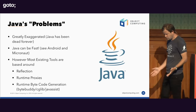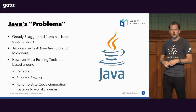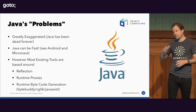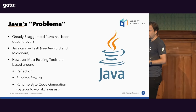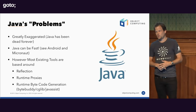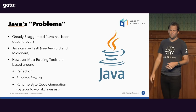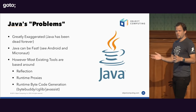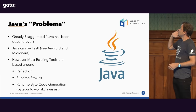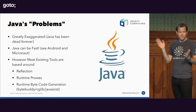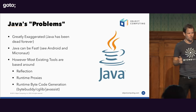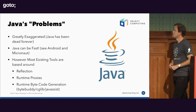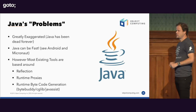Java's problems are greatly exaggerated. There has been a campaign against Java since the beginning of time — because of Ruby on Rails, then Node, now it's Go. But Java has been 'dead' forever and it's not dying anytime soon. It's still the number one language and will be for the next five years. Java can be fast. Just look at Android and Micronaut.